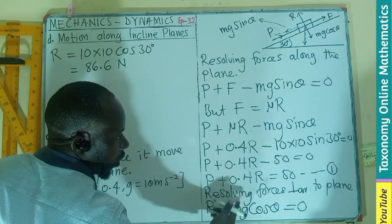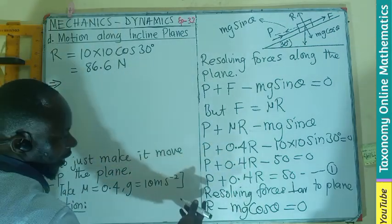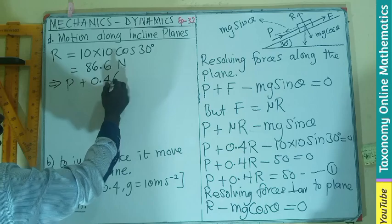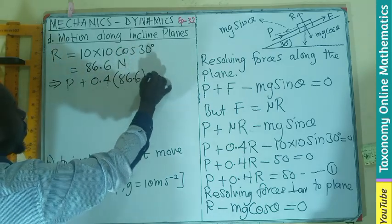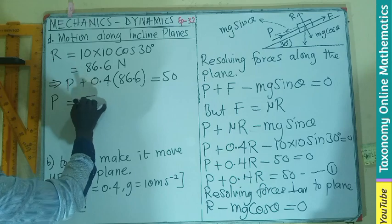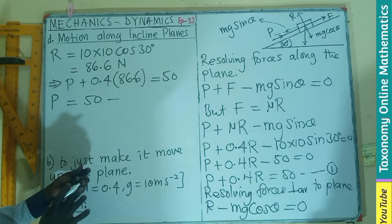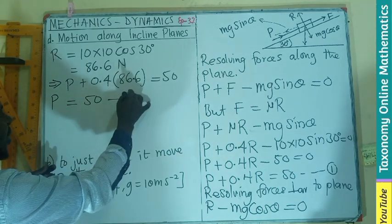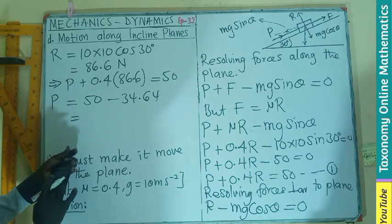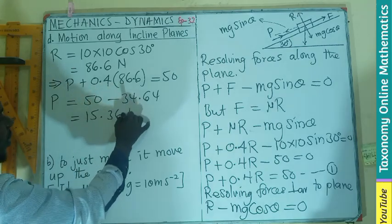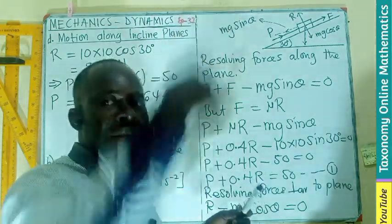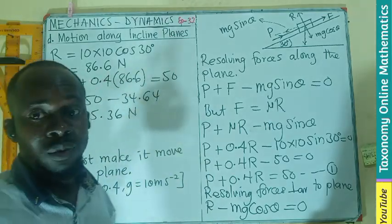So now this can be put into equation 1. That implies that from equation 1, I have P plus 0.4 times normal reaction 86.6 equals 50. So the force parallel to the surface is going to be 50 minus when we multiply 0.4 by 86.6 and that gives us 34.64. And by subtraction, that gives you 15.36 newtons. So the force parallel to the surface that will hold the body at rest is going to be 15.36 newtons.